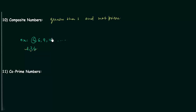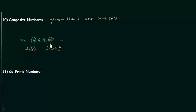In the same way, we can check for 15. The factors of 15 are 1, 3, 5, and 15. It is divisible by 1 and itself, but it is also divisible by 3 and 5. Thus it is not a prime number, hence it is a composite number.